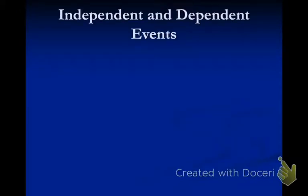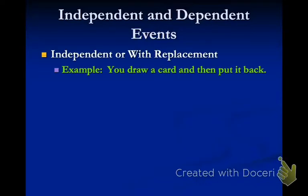There are two different compound probability events: one's independent and one's dependent. Independent means with replacement. For example, if you are drawing cards from a deck and you draw a card and then put it back, that's an independent event — the number in the deck is not changing.